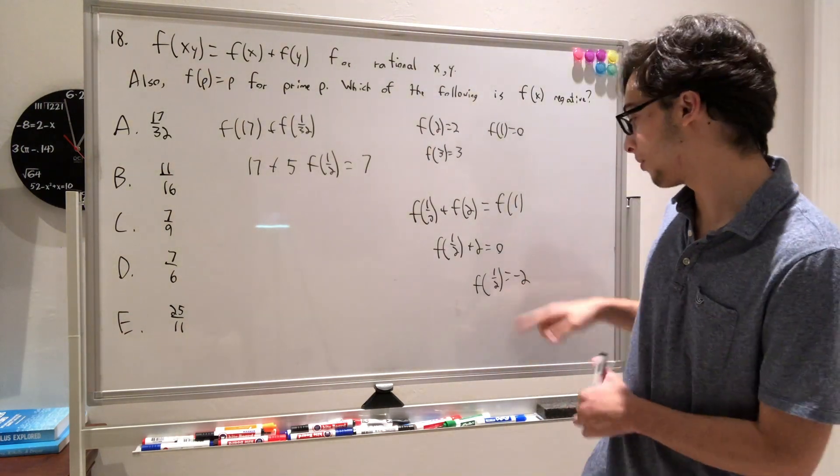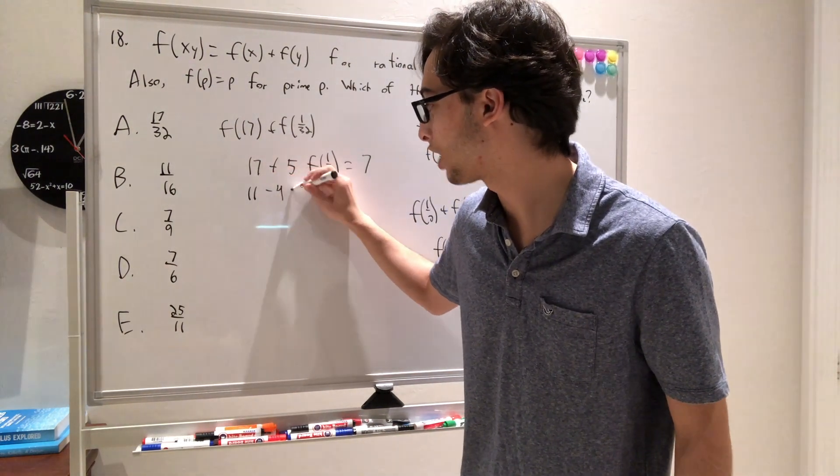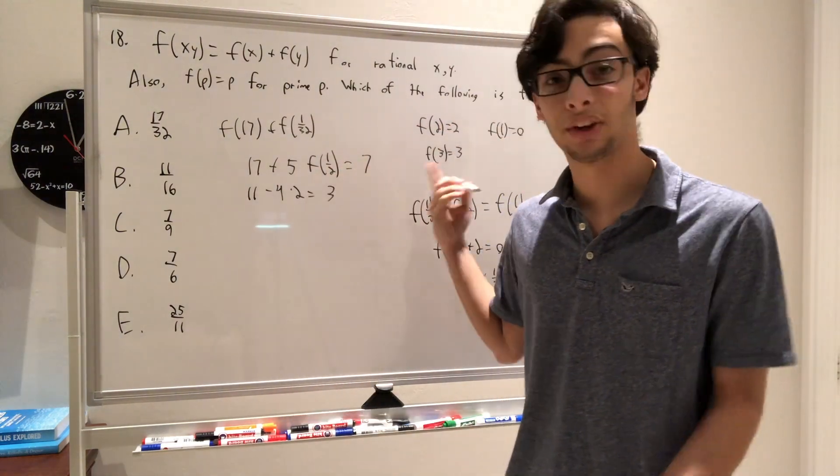So on b, we already know that f of 1 half is negative 2, so we're going to say b is going to be 11 minus 4 times 2, which is going to be equal to 3, still not negative.